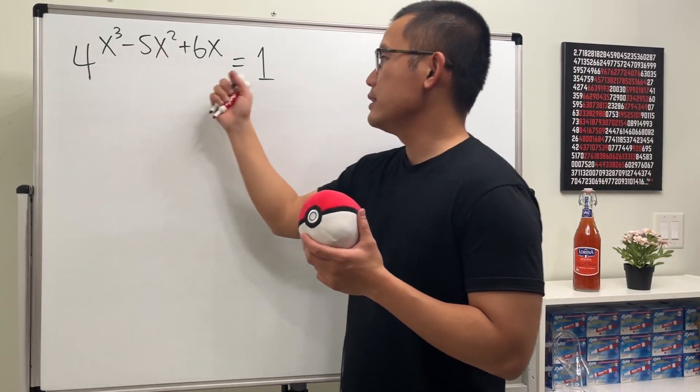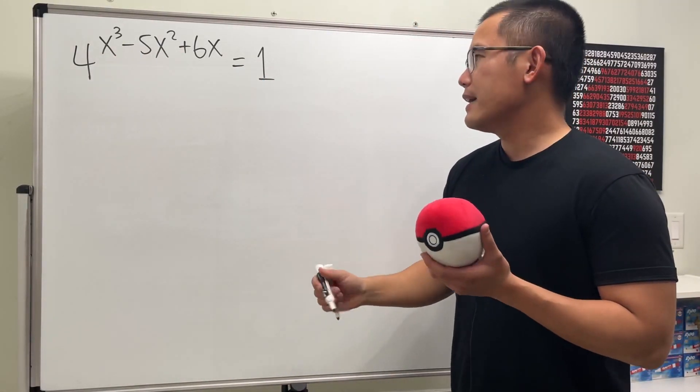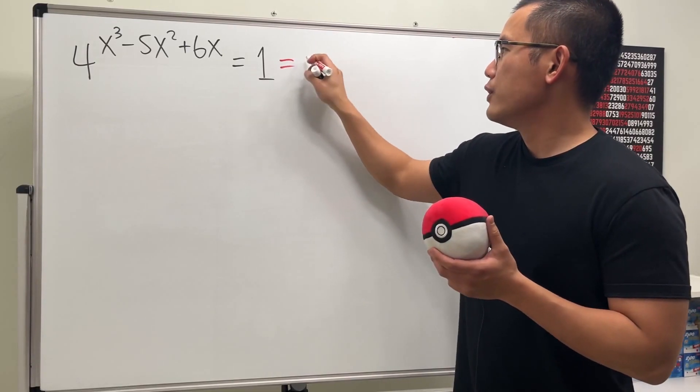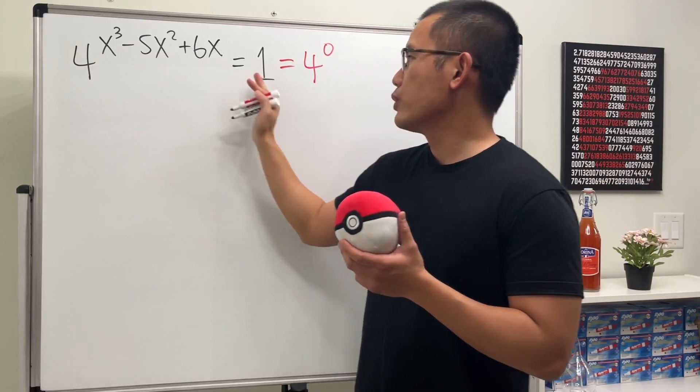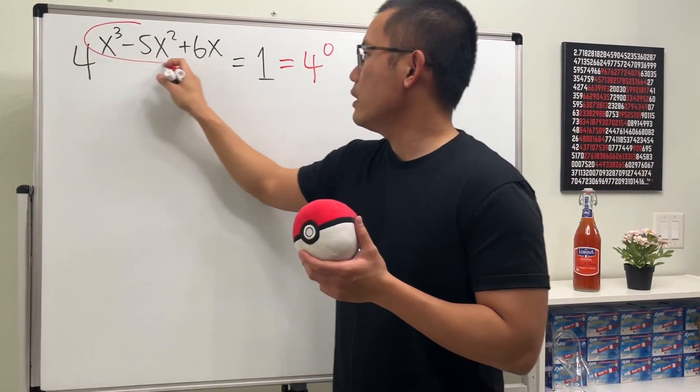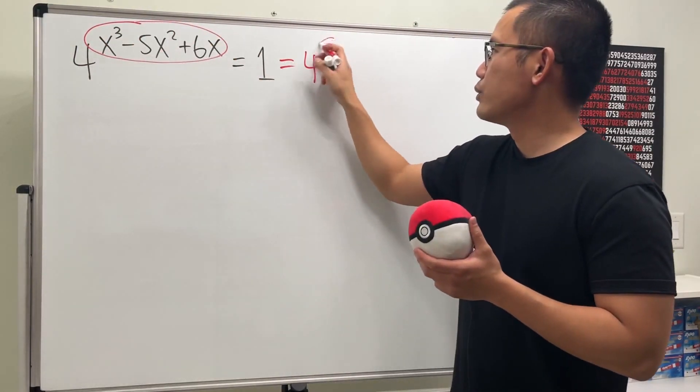We see that we have 4 to this power is equal to 1. In fact, if you look at the 1 as 4 to the zero power, then you can see that the only way for this to be equal to 1 is this power has to be equal to 0.